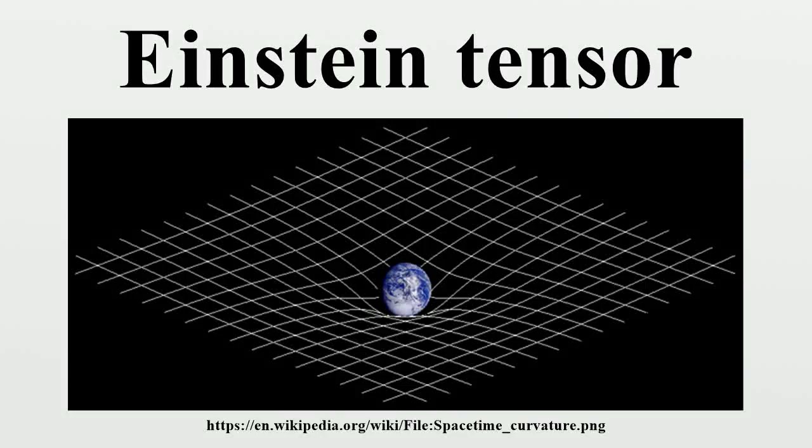In differential geometry, the Einstein tensor is used to express the curvature of a pseudo-Riemannian manifold. In general relativity, it occurs in the Einstein field equations for gravitation that describe spacetime curvature in a manner consistent with energy.